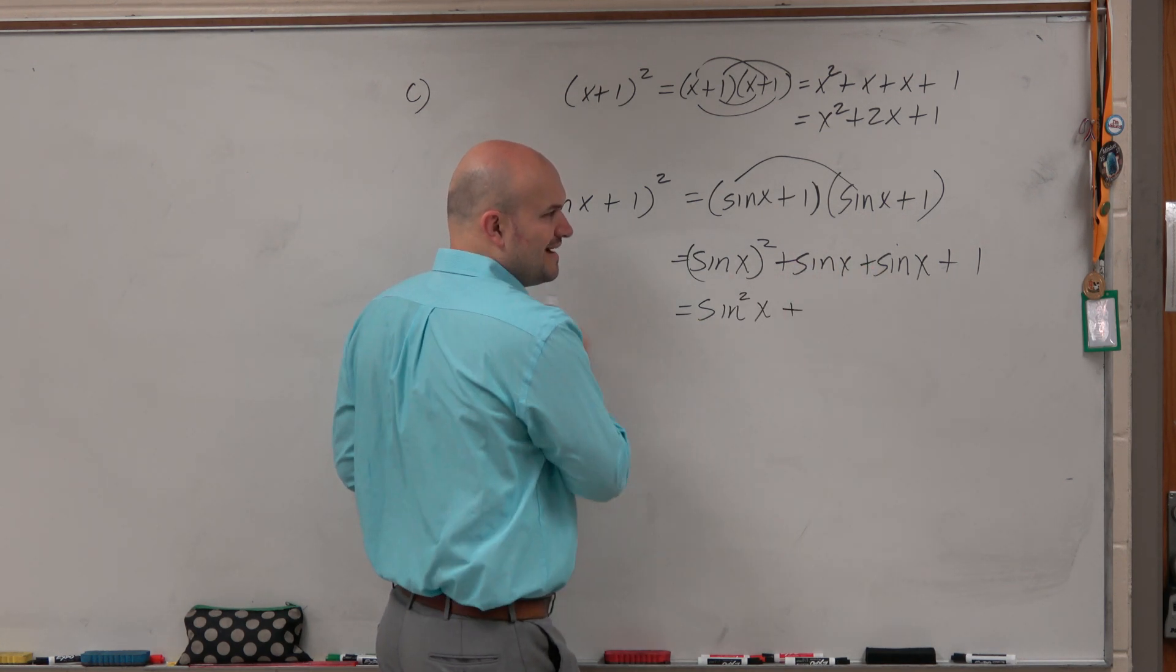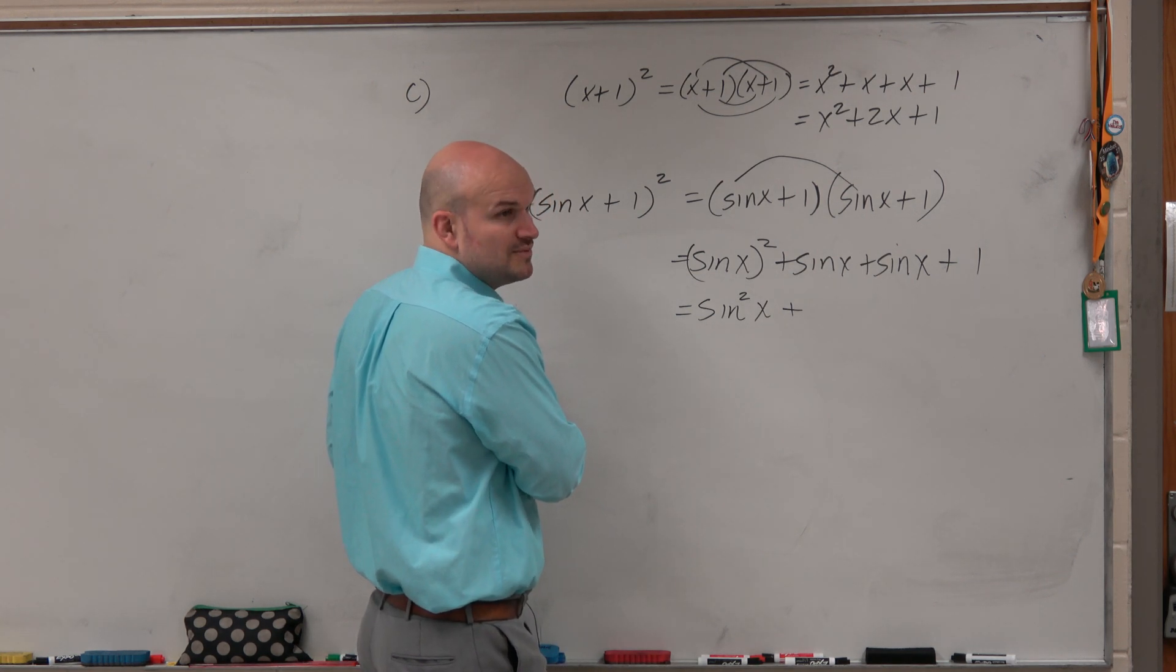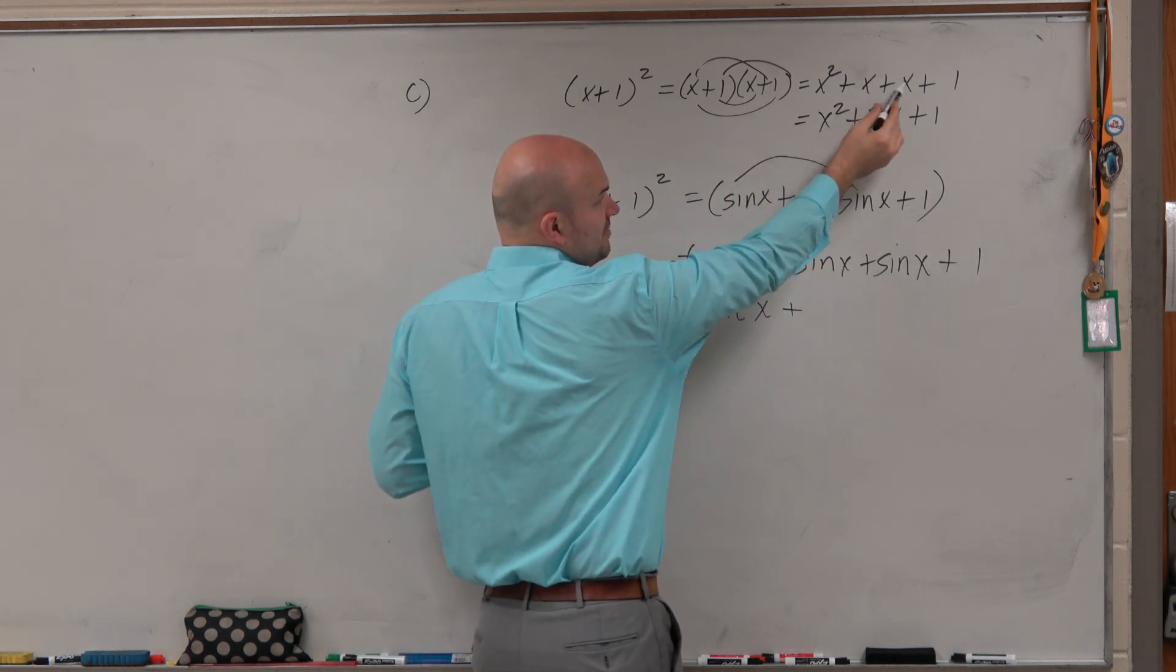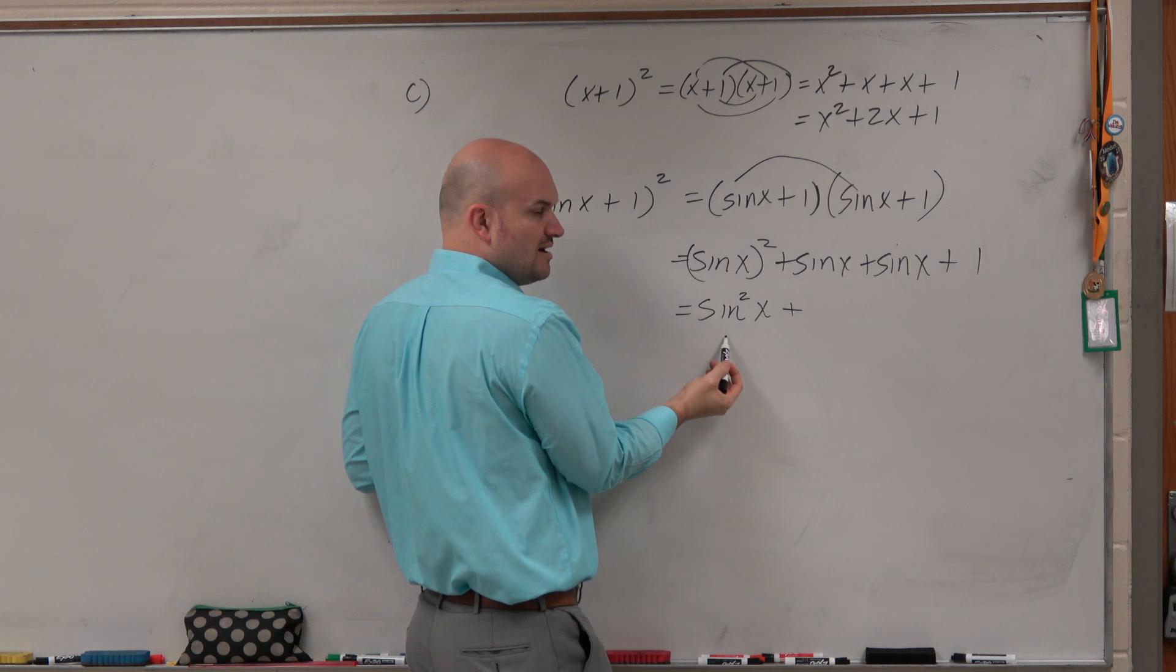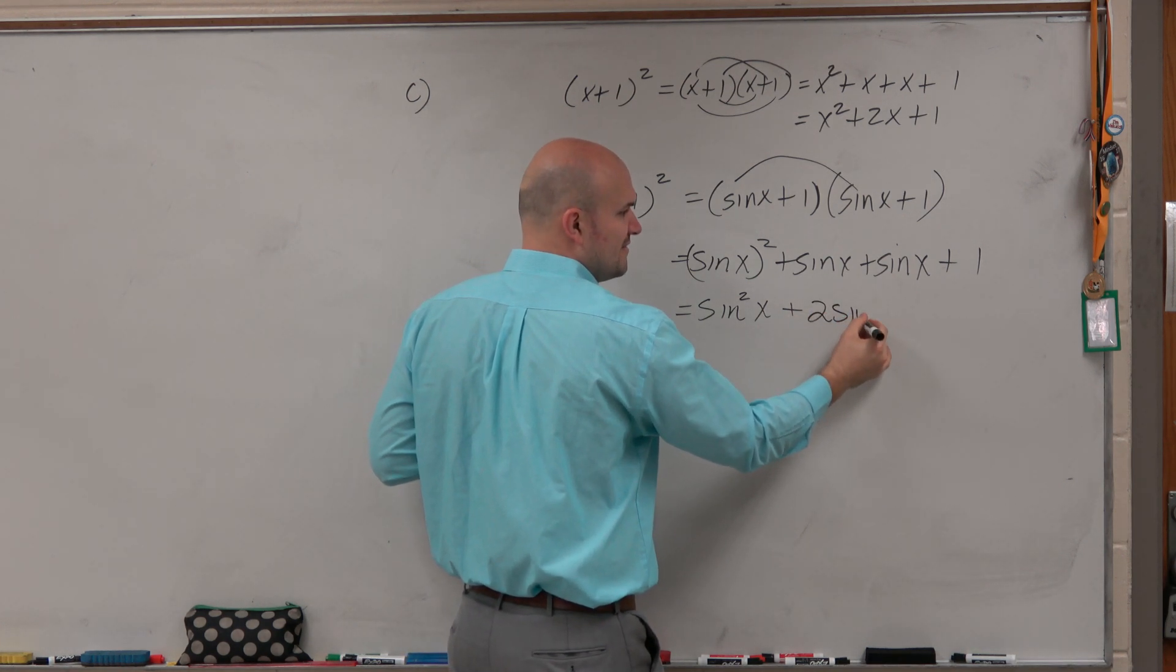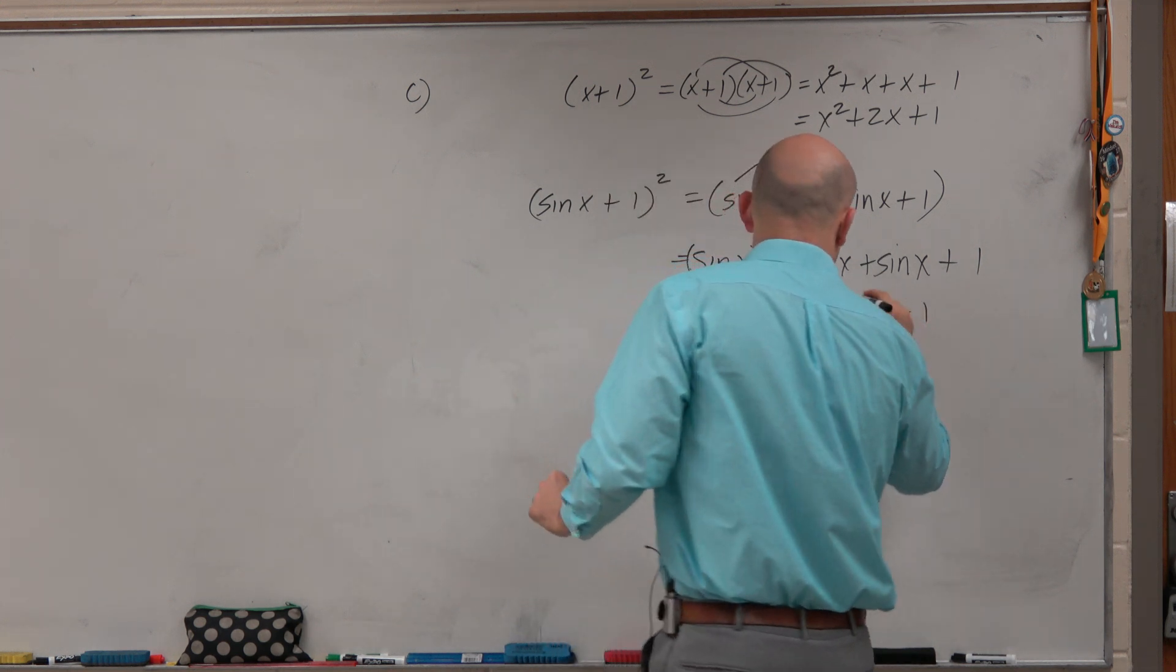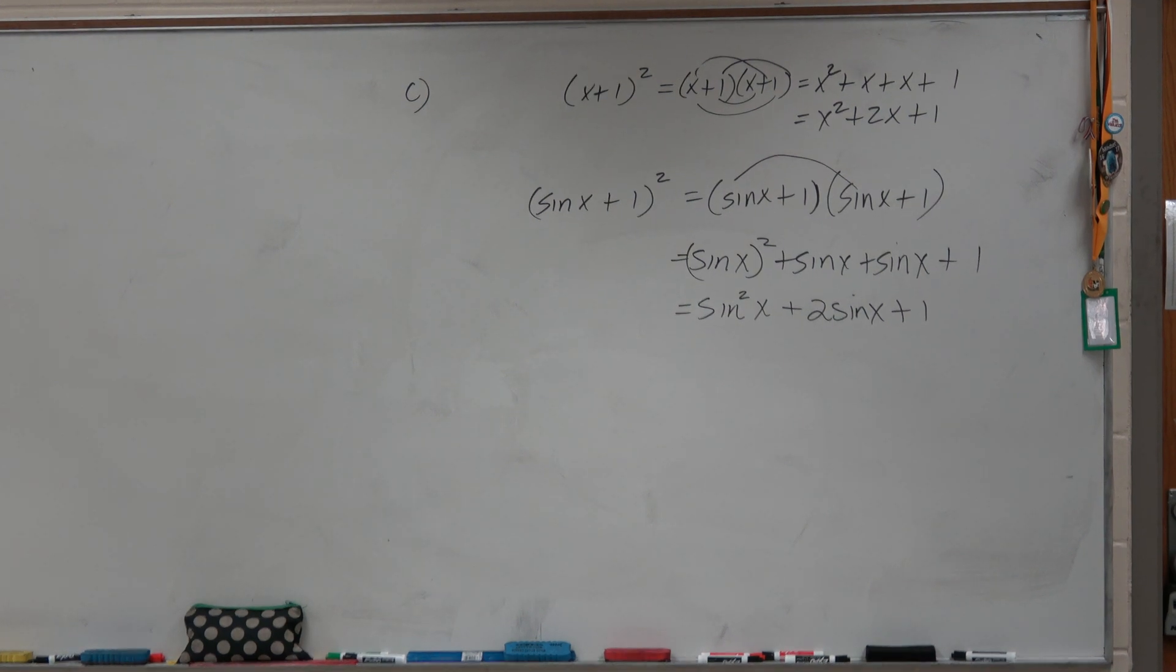And then, guys, whenever we have two quantities, if we have like x plus x, when we have x times x, we have x squared. x plus x is 2x. So sine of x times sine of x is sine squared of x. Sine of x plus sine of x is 2 sine of x. And there you go.